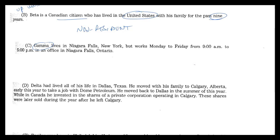Now here we've got an issue for Gamma — he or she is on the border of the U.S. and Canada. Let's call her she. She lives in the U.S. but works in Canada. So who does she have the continuing state of relationship with? She clearly has a continuing state of relationship with both, but she lives in the U.S., so she's a non-resident.